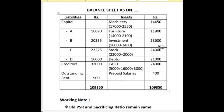Stock is increased by Rs. 2,000 from a previous balance of 22,000, so its balance is 24,000. Debtors account remains the same as there is no adjustment, at 21,000. Cash balance will increase: previous balance is 5,000, cash brought by the new partner is 16,000 and premium for goodwill is 3,000, so total cash balance is 24,000. Prepaid salary of Rs. 400 is also added. Total of the new balance sheet is Rs. 1,09,350.